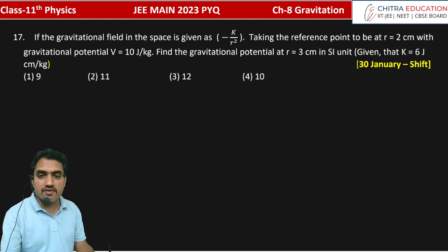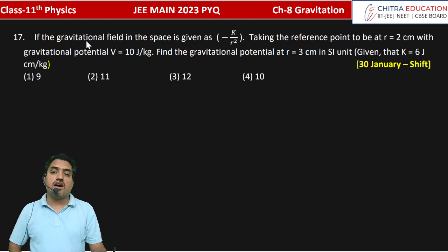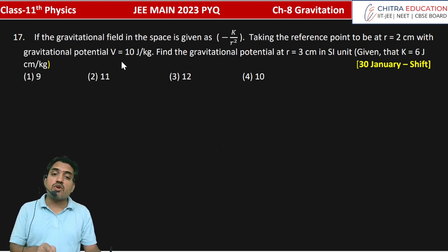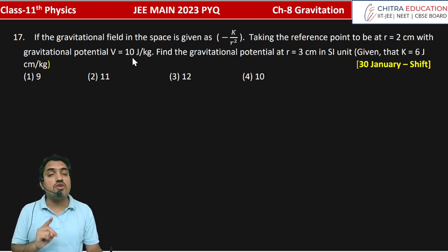Next question: if the gravitational field in space is given as minus K by R square, taking the reference point to be R equal to 2 cm with gravitational potential V equal to 10 joule per kg.